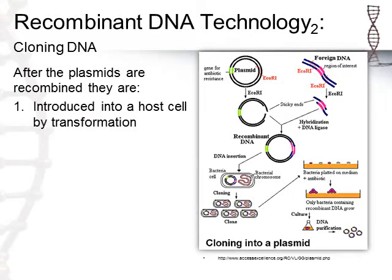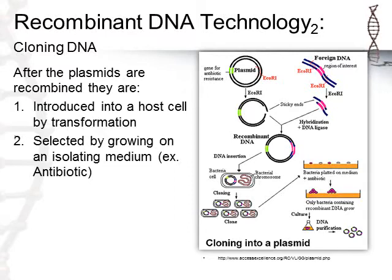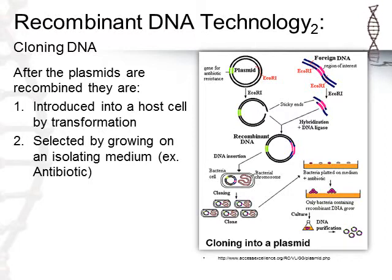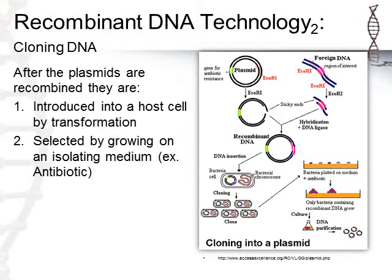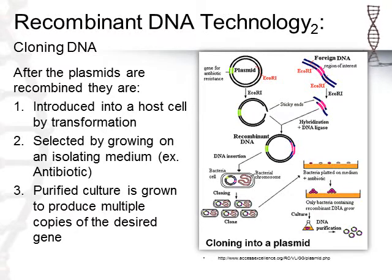After the plasmids are recombined, they're introduced into the host cell by transformation — using calcium chloride and temperature changes to cause that sweeping of the plasmid into the now competent bacterial cell. We then put the bacteria into a growth medium. Because the medium has antibiotics, bacteria that didn't take up the plasmid with the gene of interest will die off, and we can harvest the bacteria we wanted and let them grow to harness the protein we're looking for.